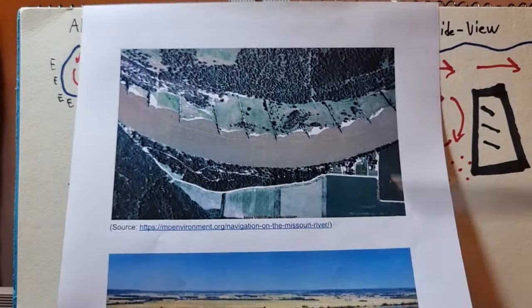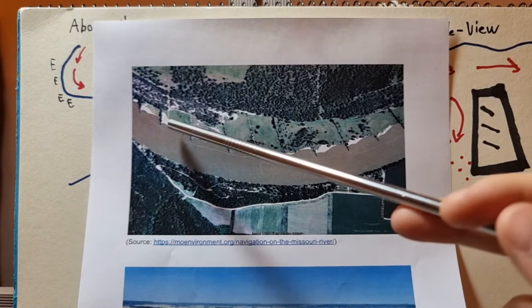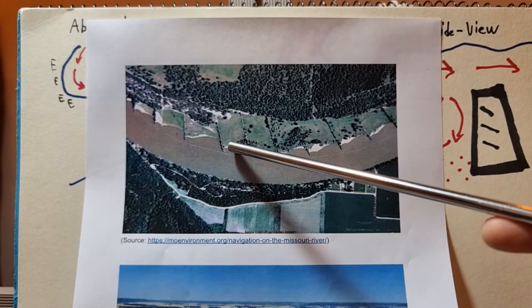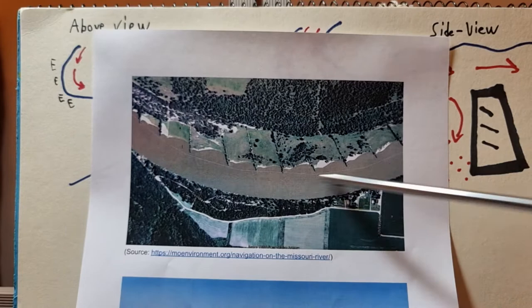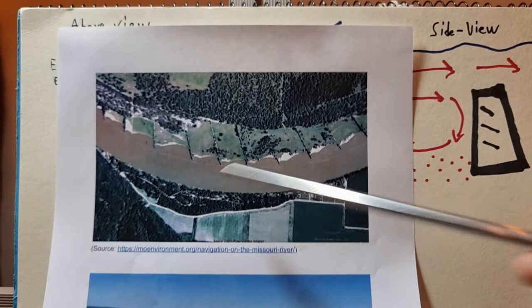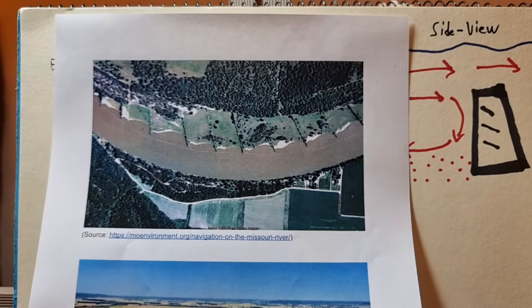Here is the Missouri River crossing the United States. You can see here, this is where all the multiple sets of winged dikes are. On the other side, we have this big channel that is wider, deeper, and faster, and it can be used for voyages, vessels.